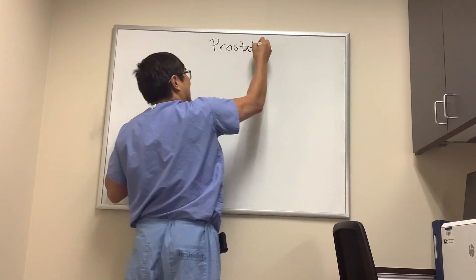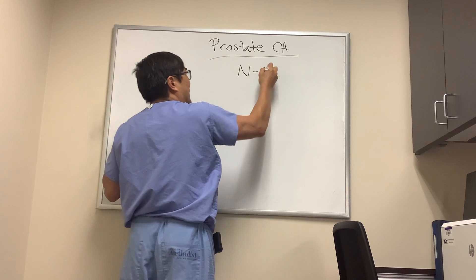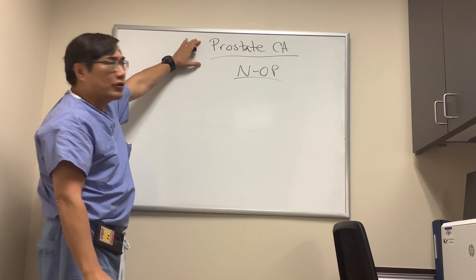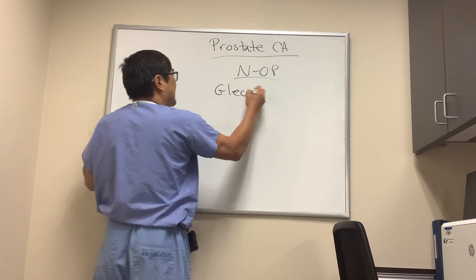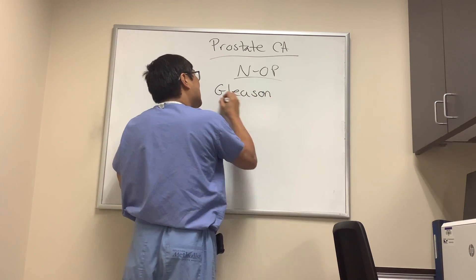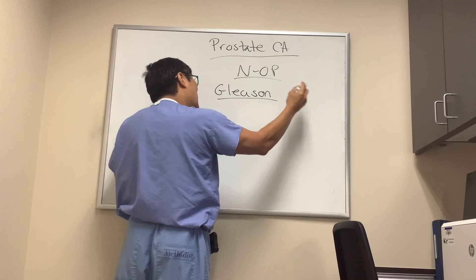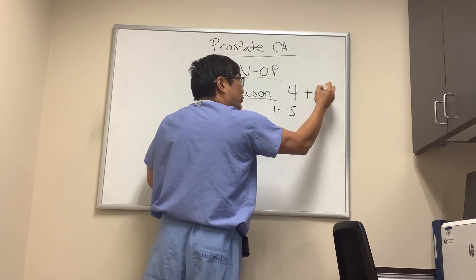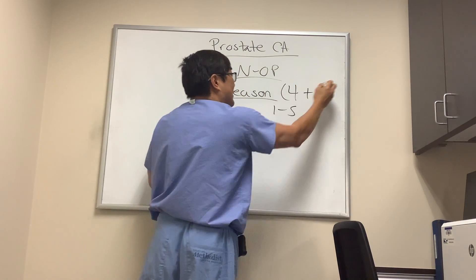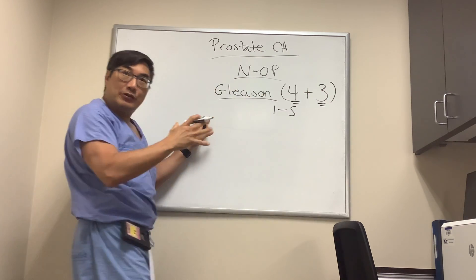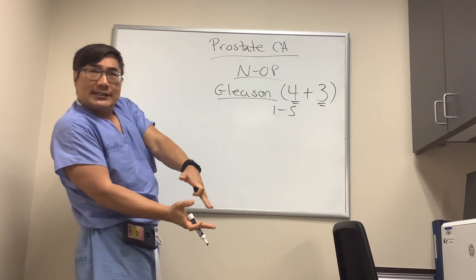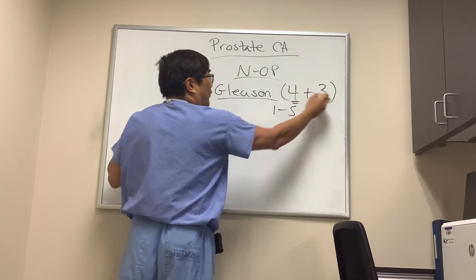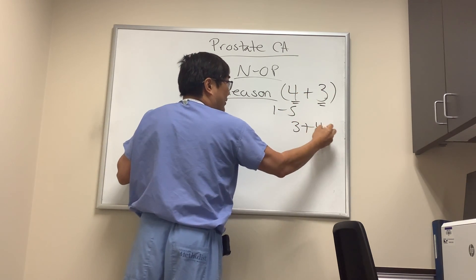Prostate cancer has an unusual grading scale that urologists use called the Gleason scale. It's graded one to five, and the score is expressed as two numbers with a plus sign — the most common grade plus the second most common grade. For example, a four plus three equals a Gleason seven, and that is worse than a three plus four Gleason seven, because the most common component determines prognosis.